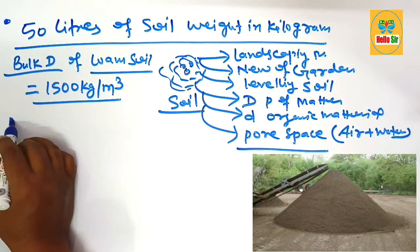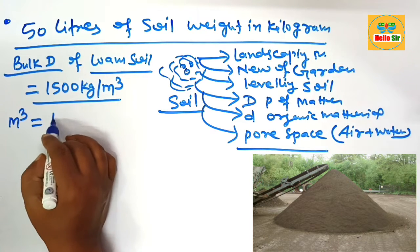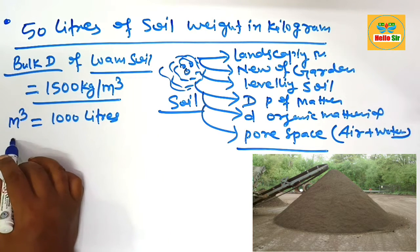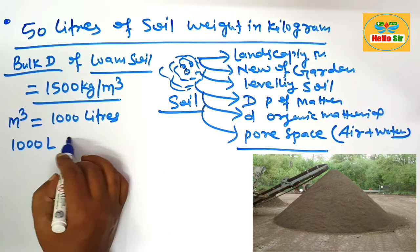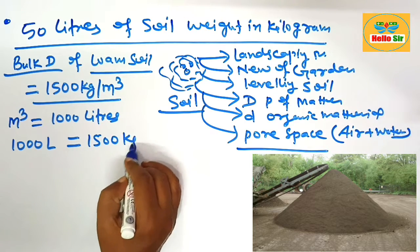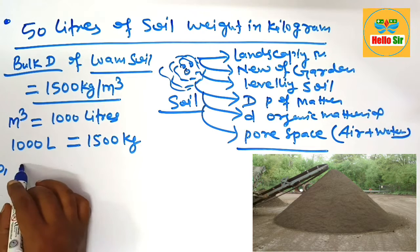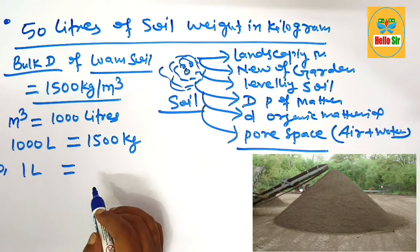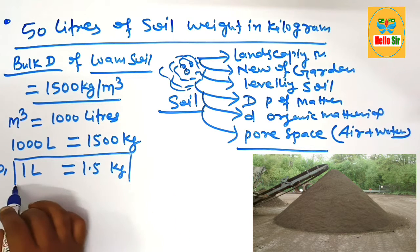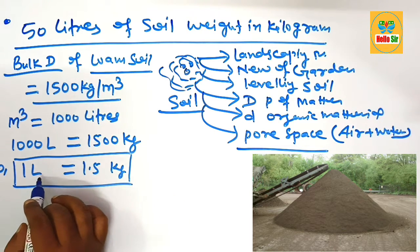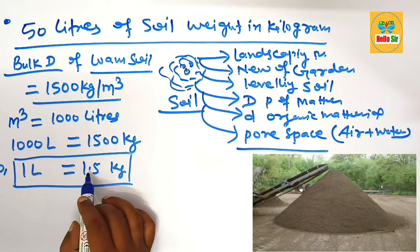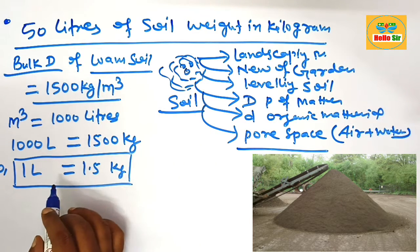As you know, one cubic meter is equal to 1000 liters. That's why 1000 liters of soil is equal to 1500 kilogram. So one liter of soil would weigh around 1.5 kilogram. This is the conversion factor — one liter of soil weighs about 1.5 kilogram approximately.